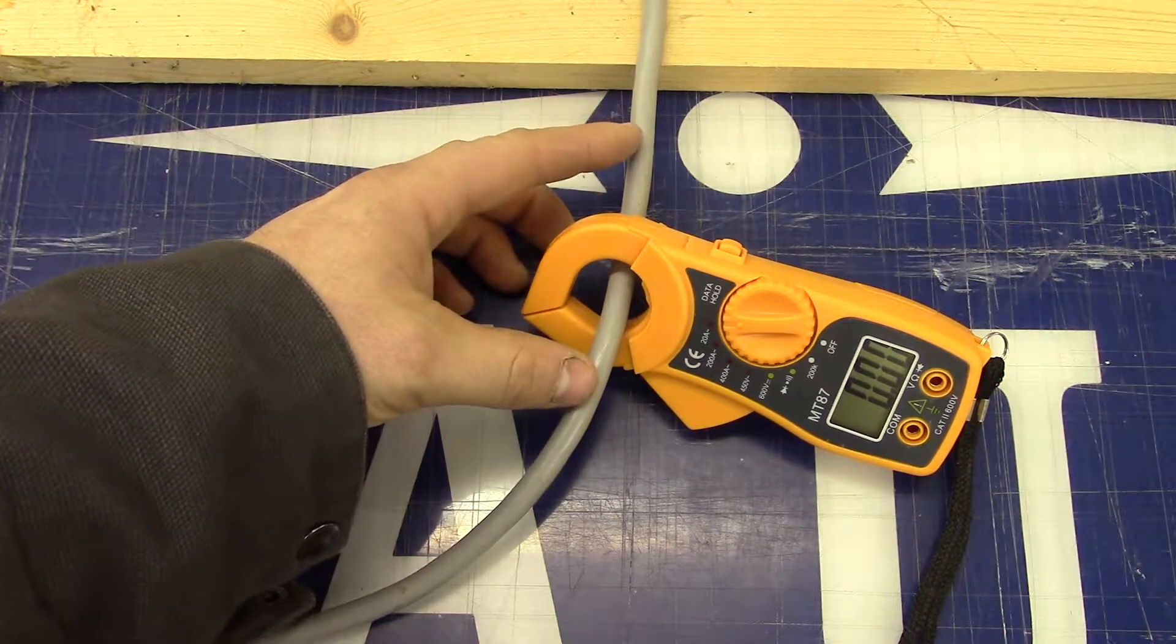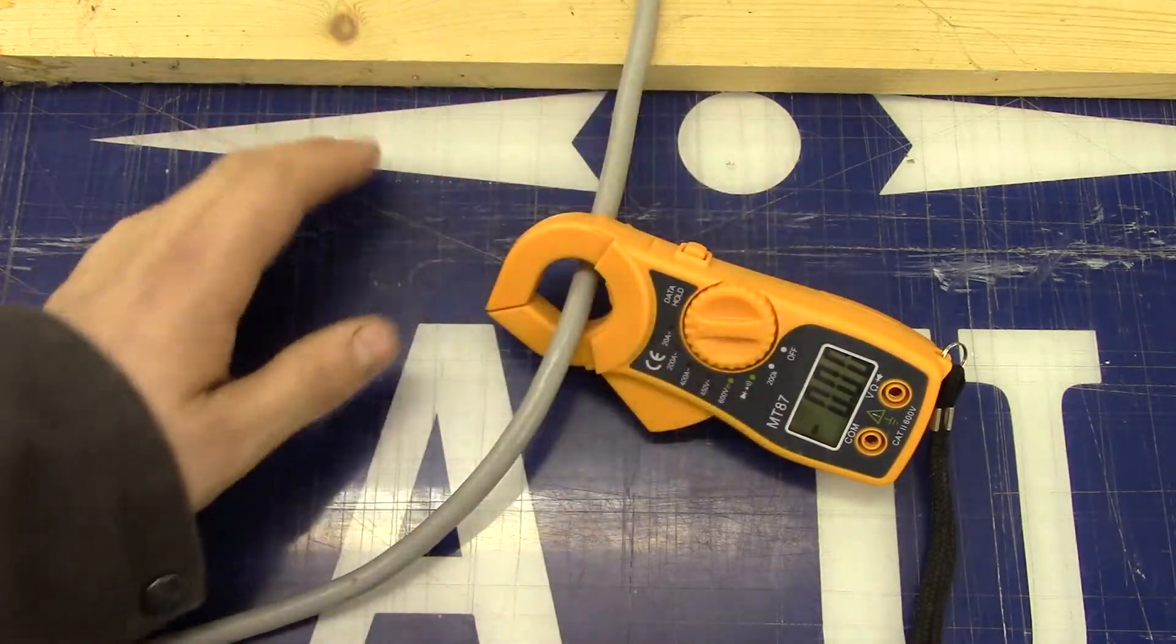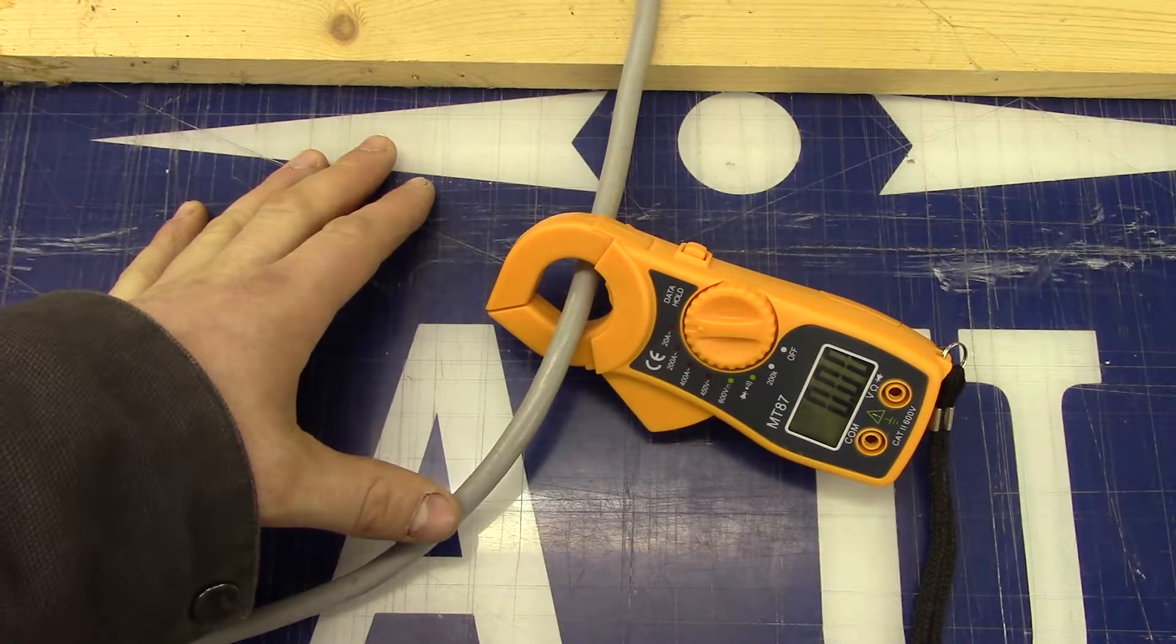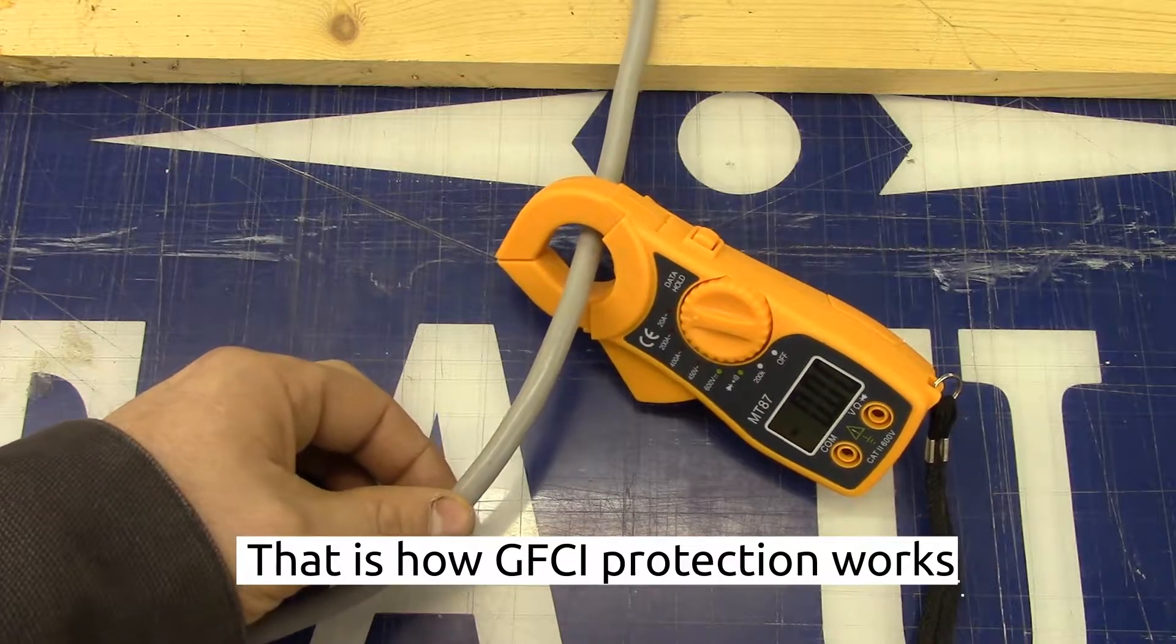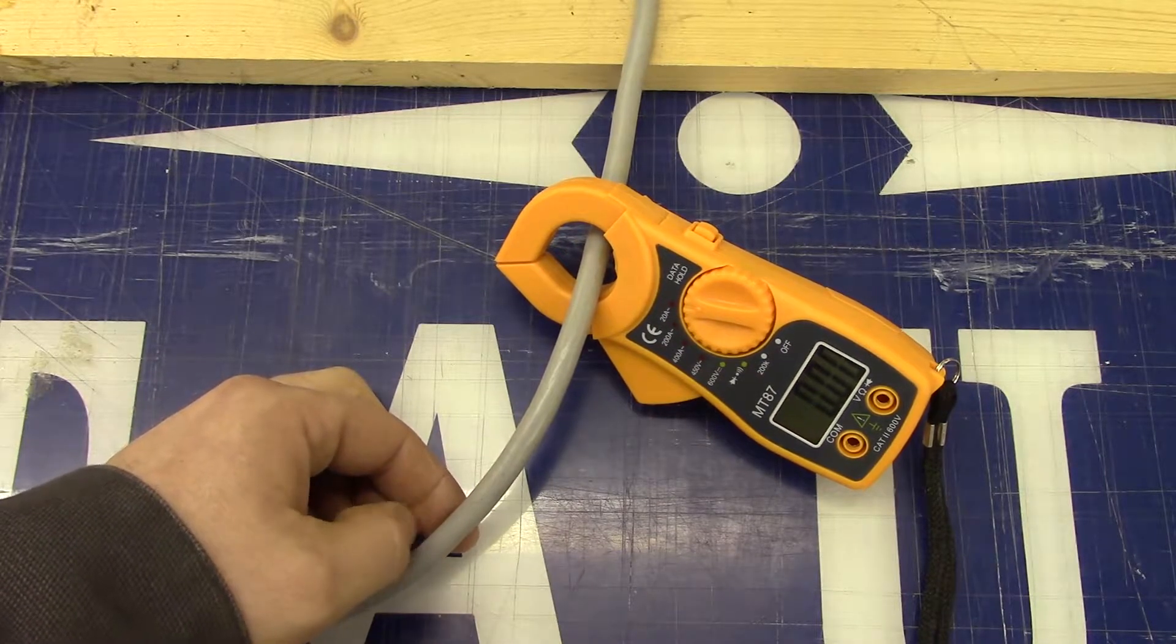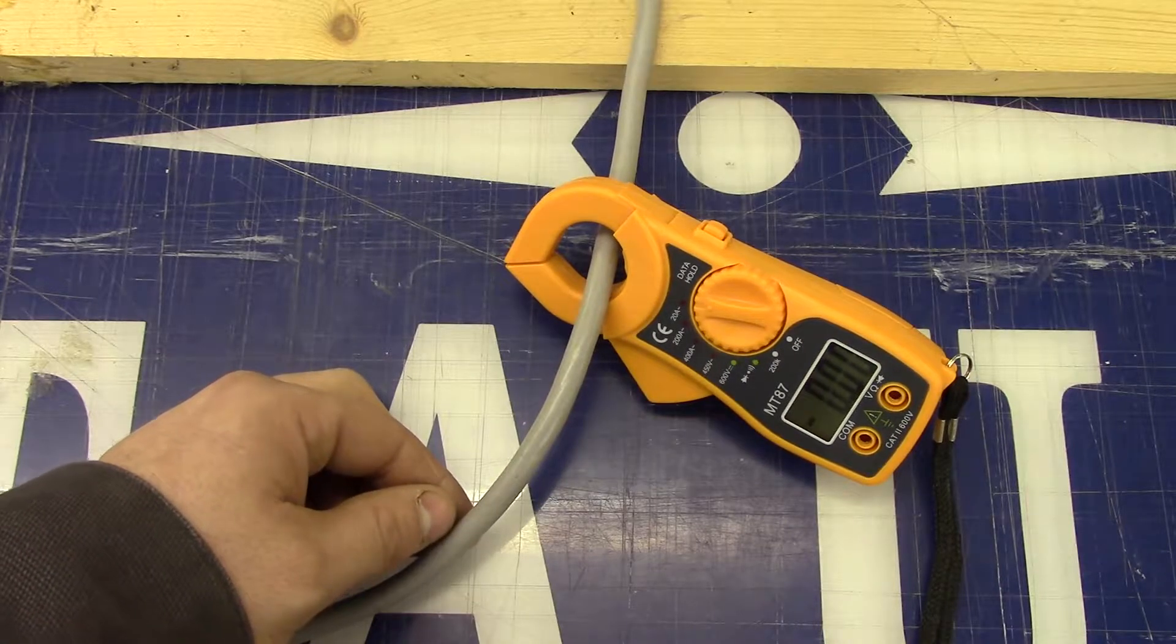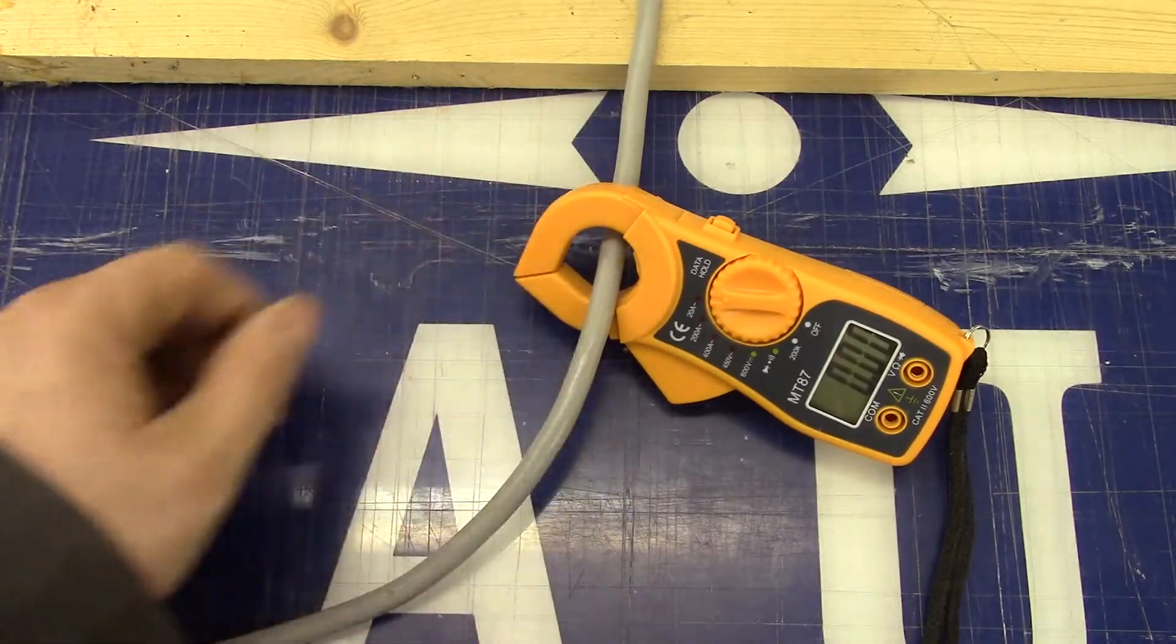And that's what you're going to wind up reading instead of the current flowing, is you're going to wind up with the difference between the two, which should be zero unless you have a short somewhere going to ground, which will actually have the ground wire in here too. So unless you have it shorting going off somewhere else with an alternate path to ground, you're not going to read anything.